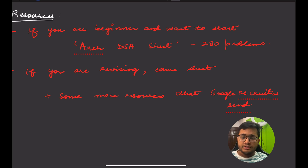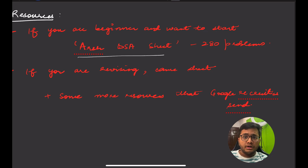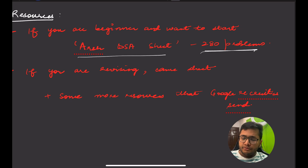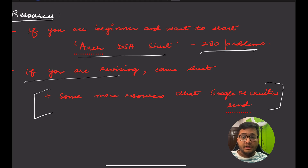For beginners looking to prepare for such companies, there is Striver's DSA Sheet — linked in the description below — with 280 questions. Fix a timeline of two, three, or four months based on your capacity to solve these questions. These problems help build the foundation of your programming journey. Note that in Google's interviews, you won't get the exact same questions — they will be modifications of these, so being comfortable with the sheet means high chances of clearing the interview.